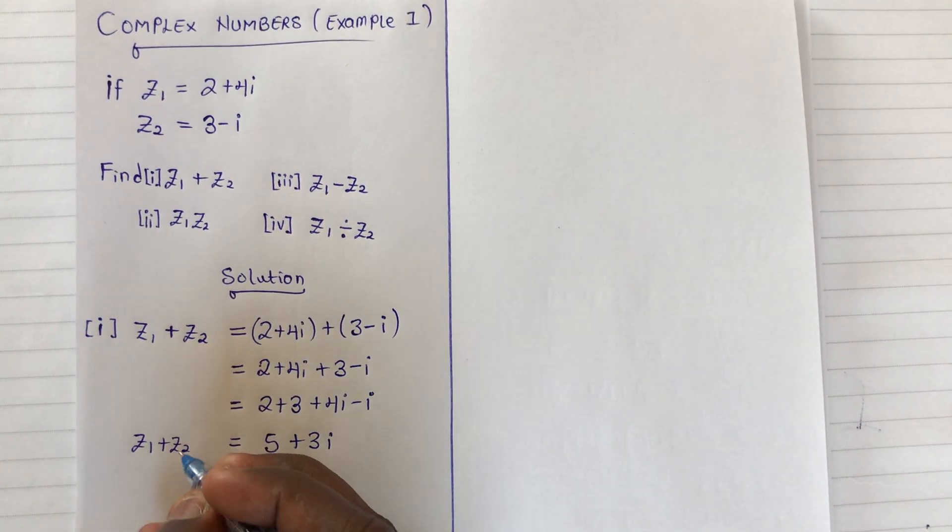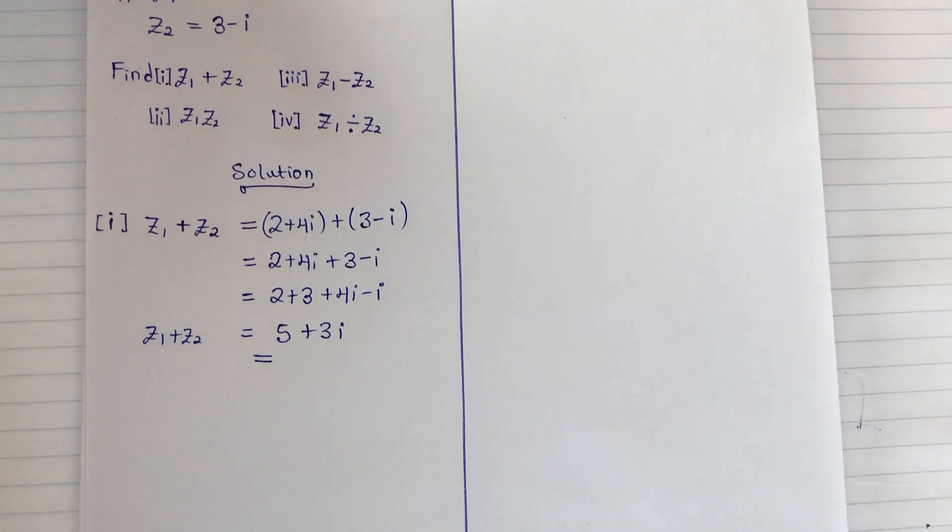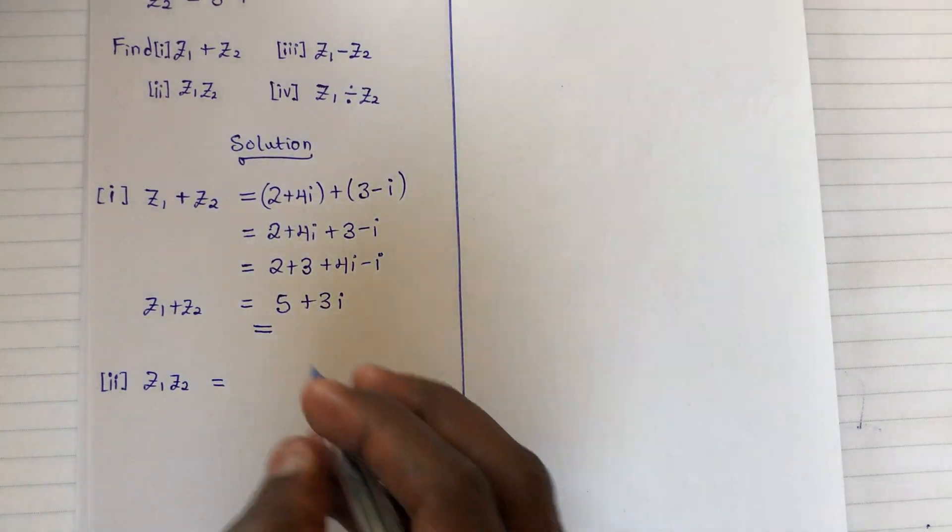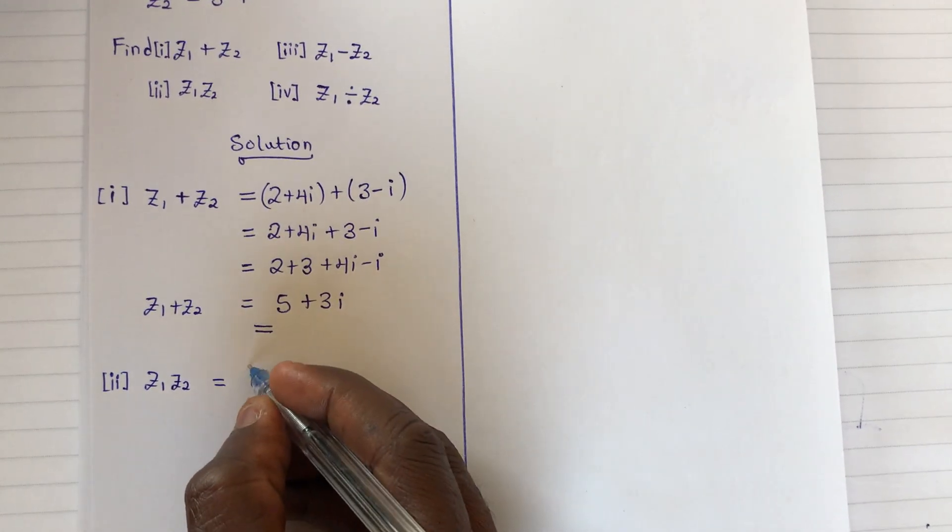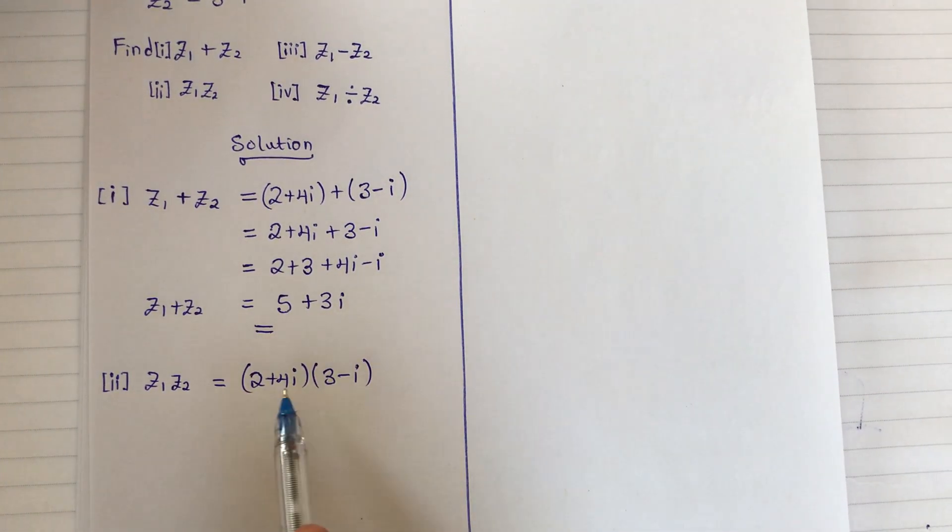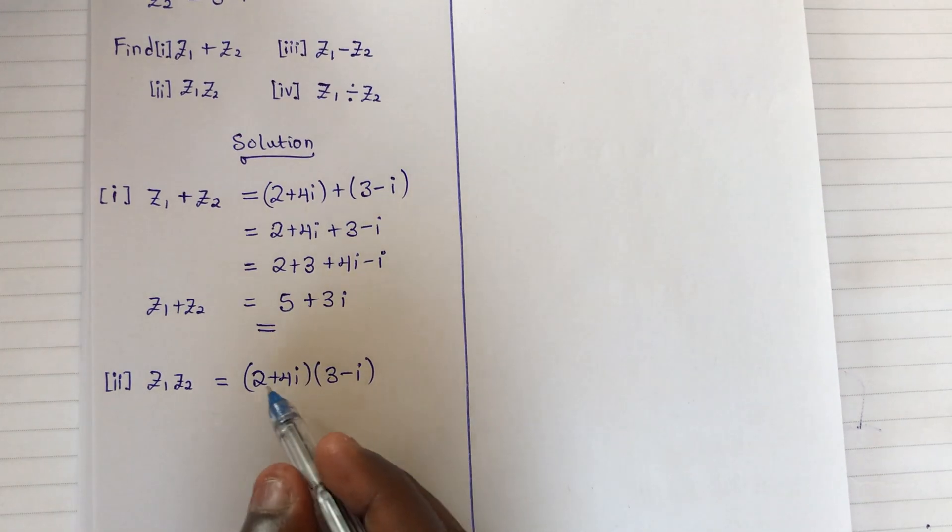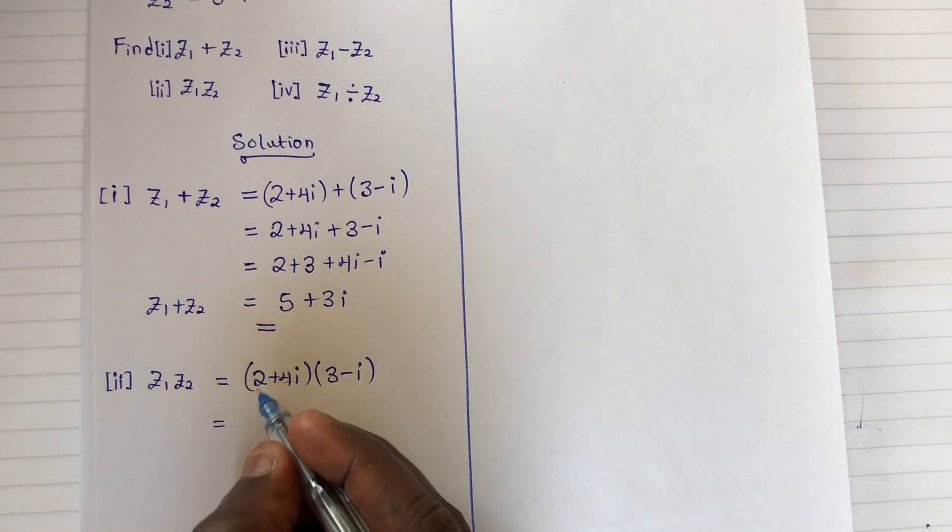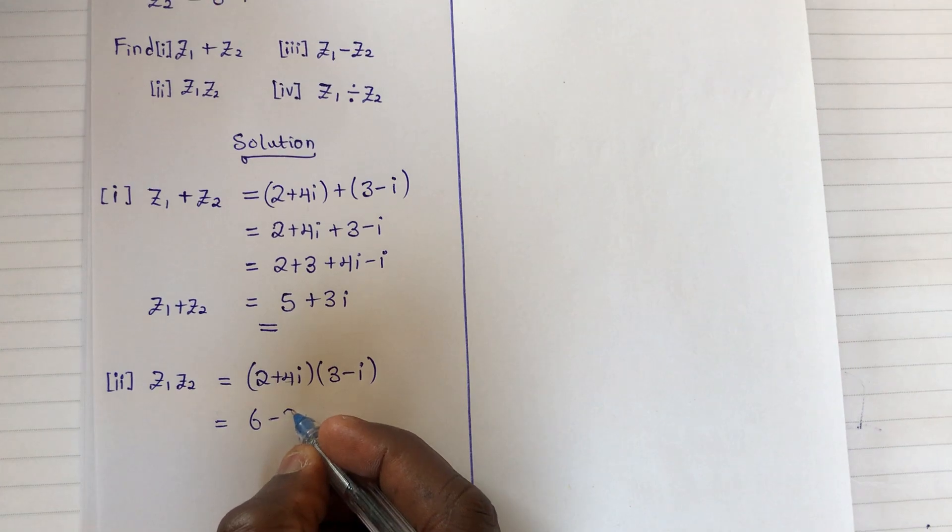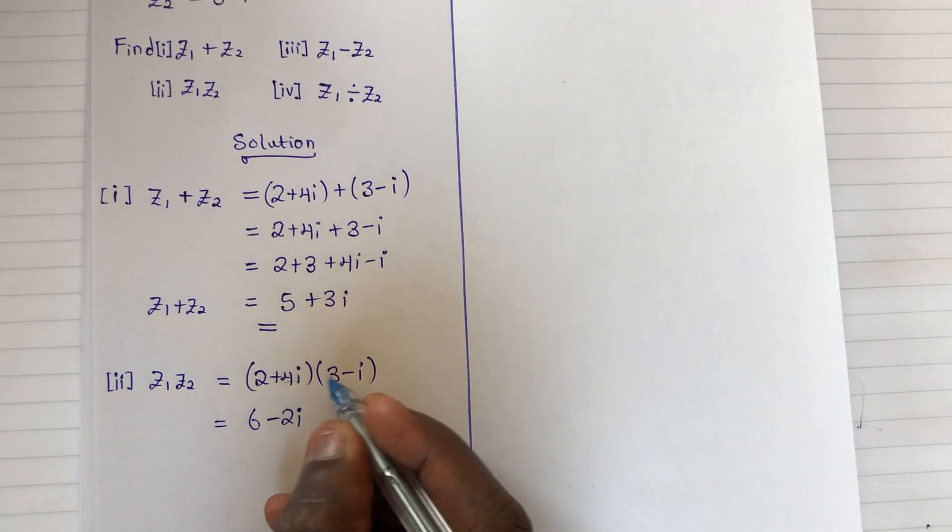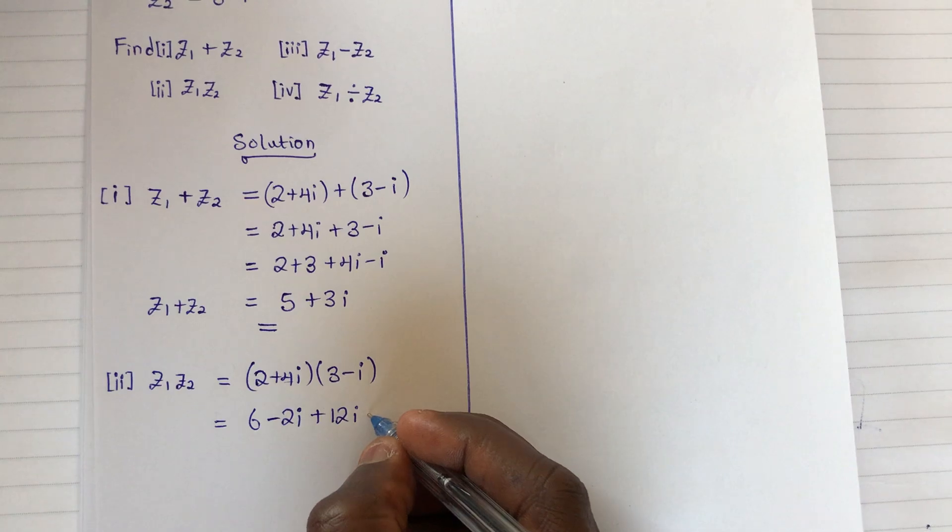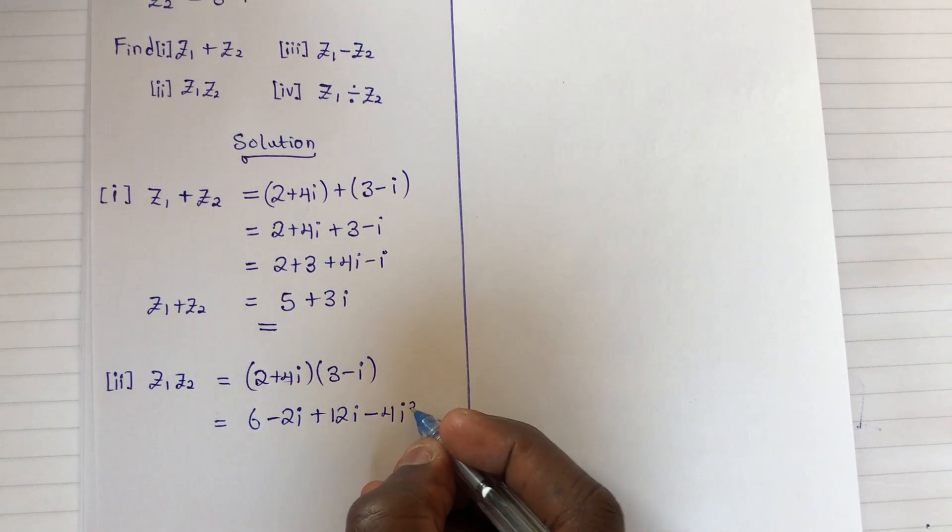Let's finish the second example. We have z1 × z2, the product of the two. We are getting (2 + 4i)(3 - i). We expand the brackets: 2 × 3 = 6, 2 × (-i) = -2i, 4i × 3 = 12i, and 4i × (-i) = -4i².